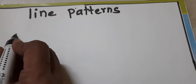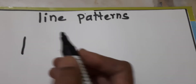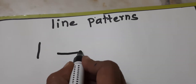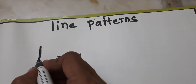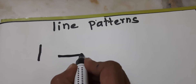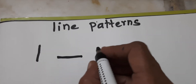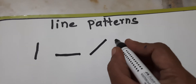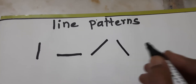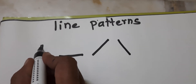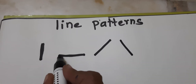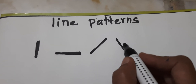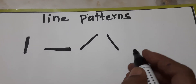Standing line, standing line, then sleeping line, standing line, sleeping line. Next, slanting up, slanting up, slanting down. Standing line, sleeping line, slanting up, slanting down.